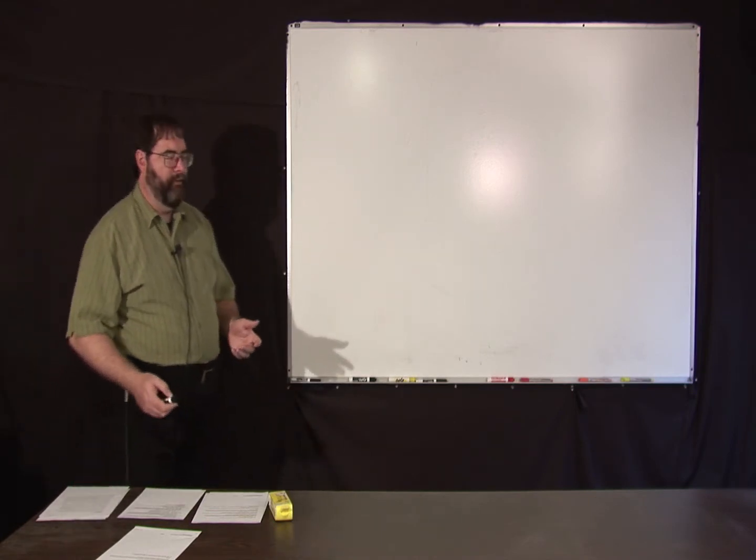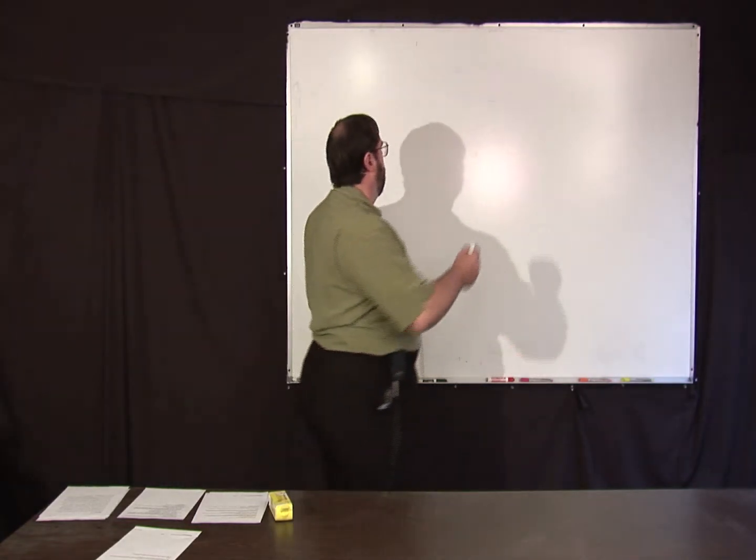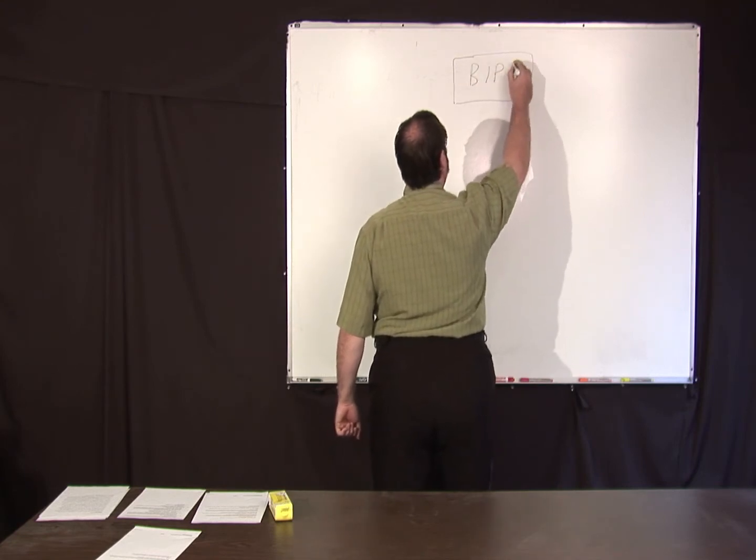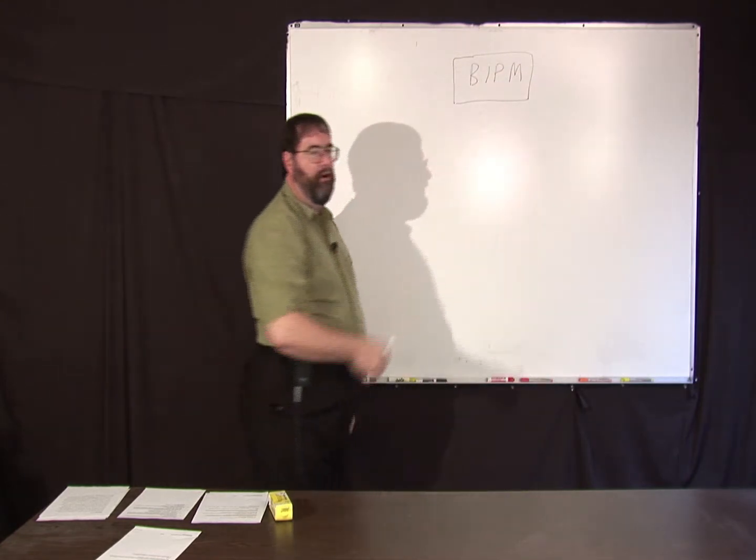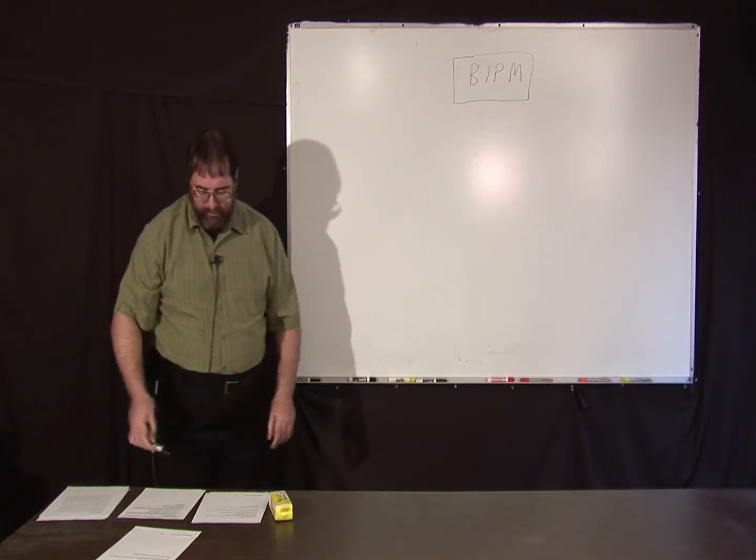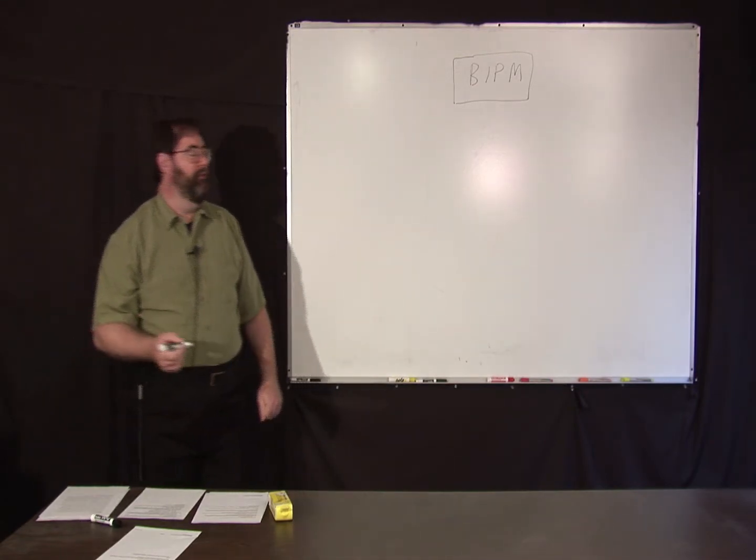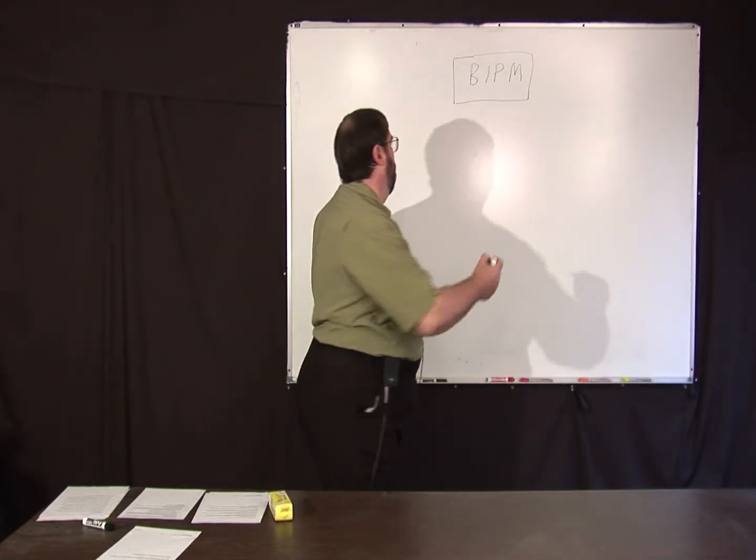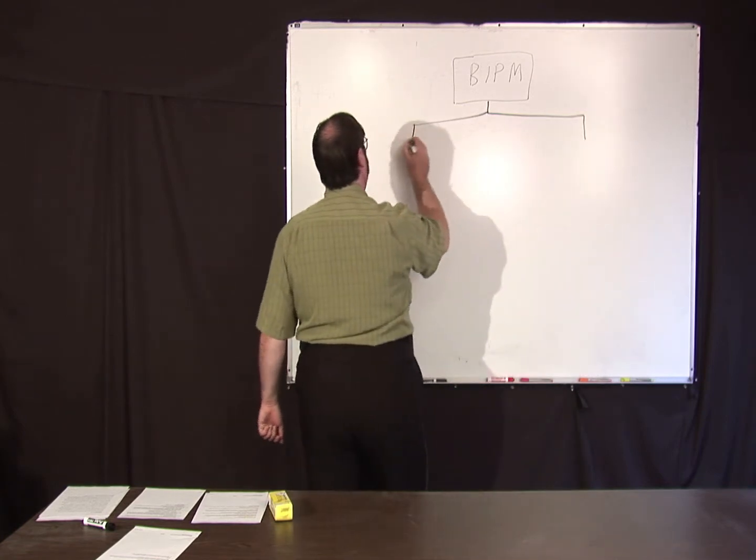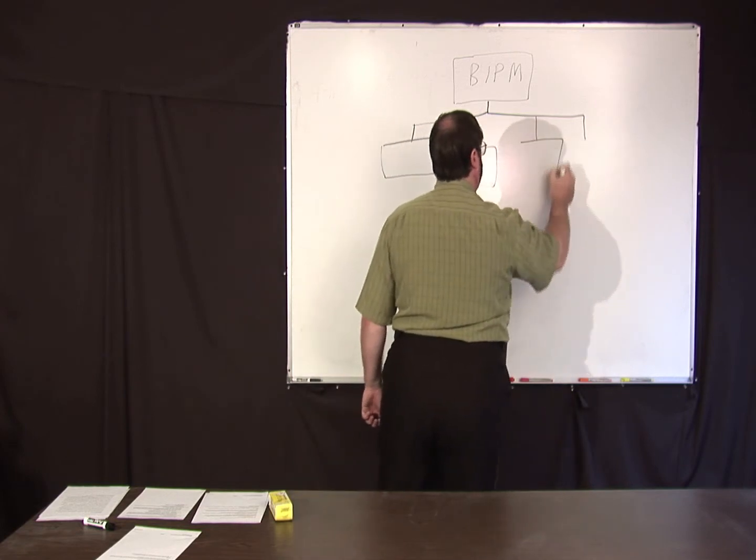For instance, the kilogram is traceable to a particular standard at the BIPM in France. There's a particular artifact that defines the kilogram. A bunch of duplicate standards were made, and they were compared against that standard and passed out to a bunch of countries.